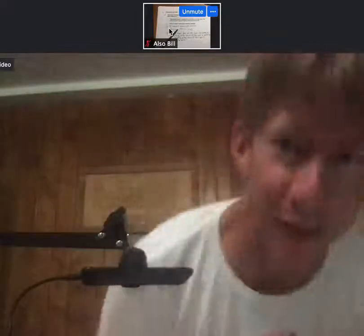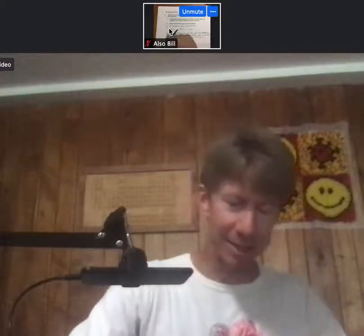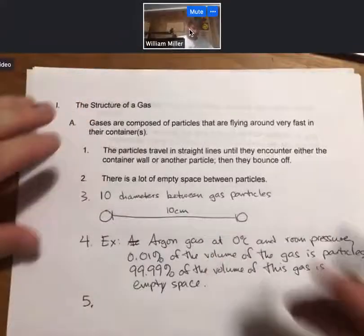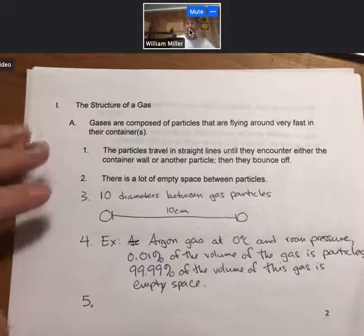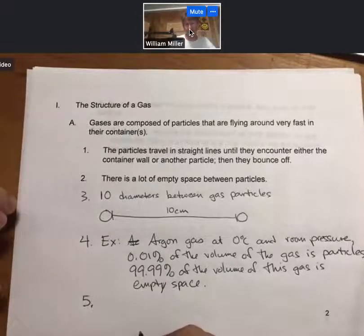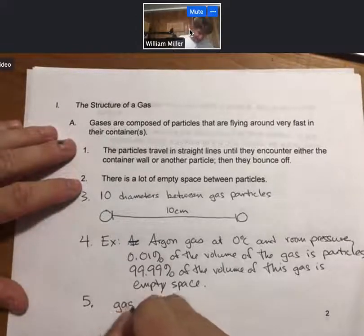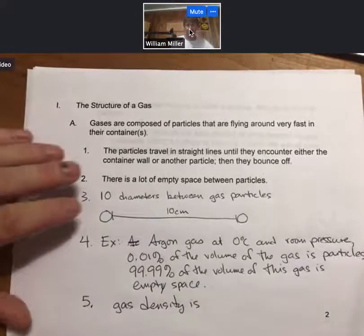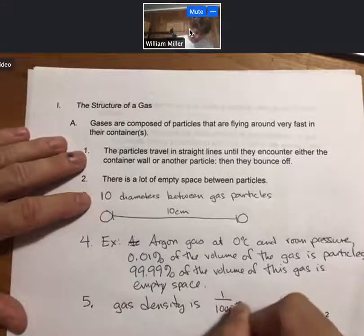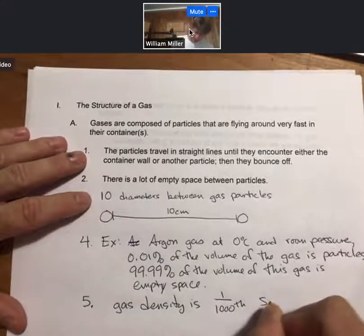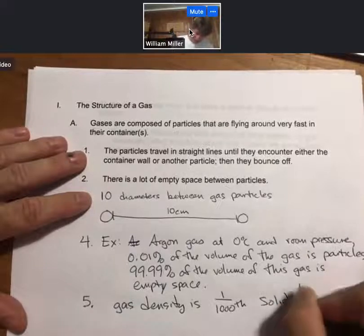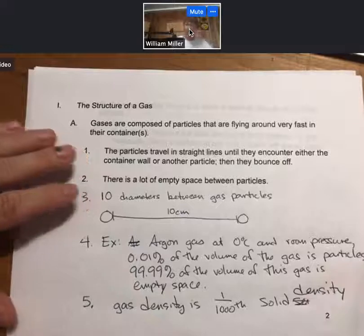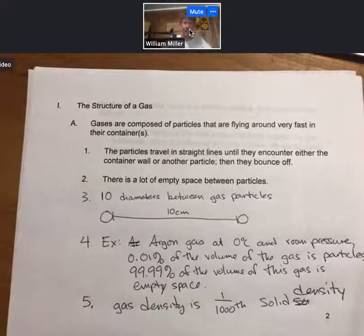In the solid phase, the particles are much closer together. It is much more dense. A good rule of thumb is that a gas has approximately one one-thousandth of the density of a solid. So gas density is one one-thousandth of the density of a solid.